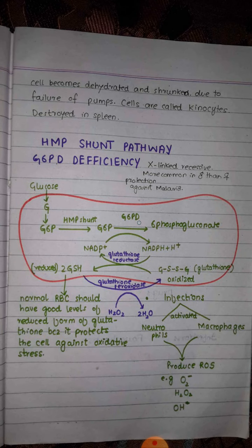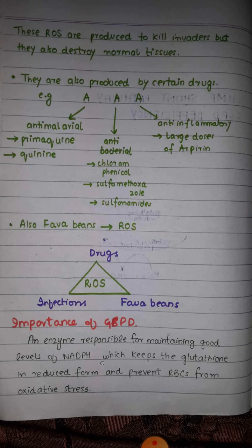So what is the importance of glucose 6-phosphate dehydrogenase? It is an enzyme responsible for maintaining good levels of NADPH, and these good levels of NADPH maintain good levels of reduced glutathione, which provides protection against reactive oxygen species and prevents red blood cells from oxidative stress.